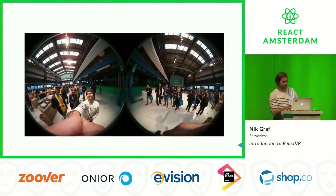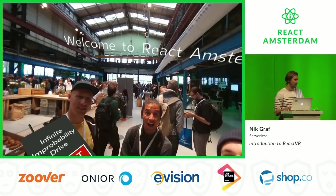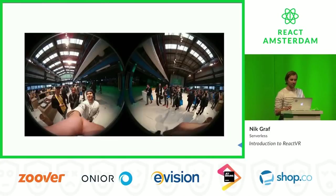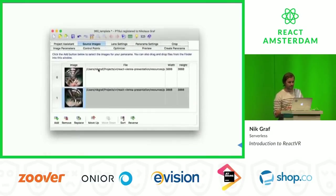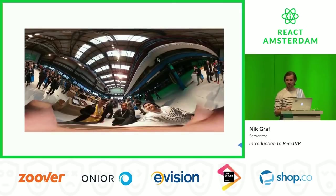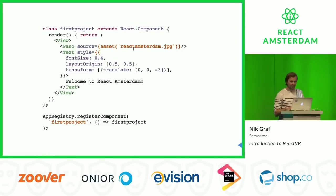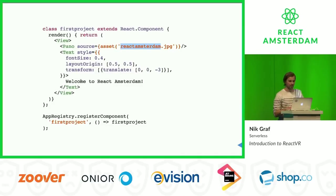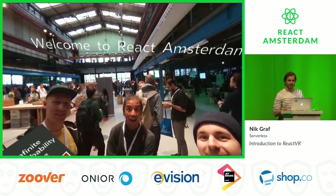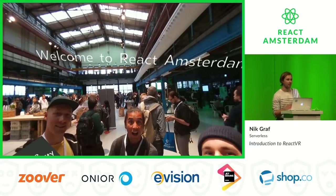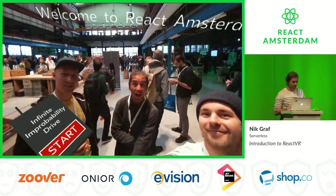One other thing to note is that even though this looks like complex 3D, it's really just a panorama. It looks really complex but it's just a 360-degree panorama rendered as a Pano component that comes out of the box with React VR, and you just drop it in. So if you remember the React Amsterdam demo — I took a picture with a 360-degree camera, which takes two fisheye images, combines them, you run it through a program to create the stretched panorama, and then just swap out the Pano source. Change the text to 'Welcome React Amsterdam' and that's it — a couple minutes of work for a full 360-degree VR experience.